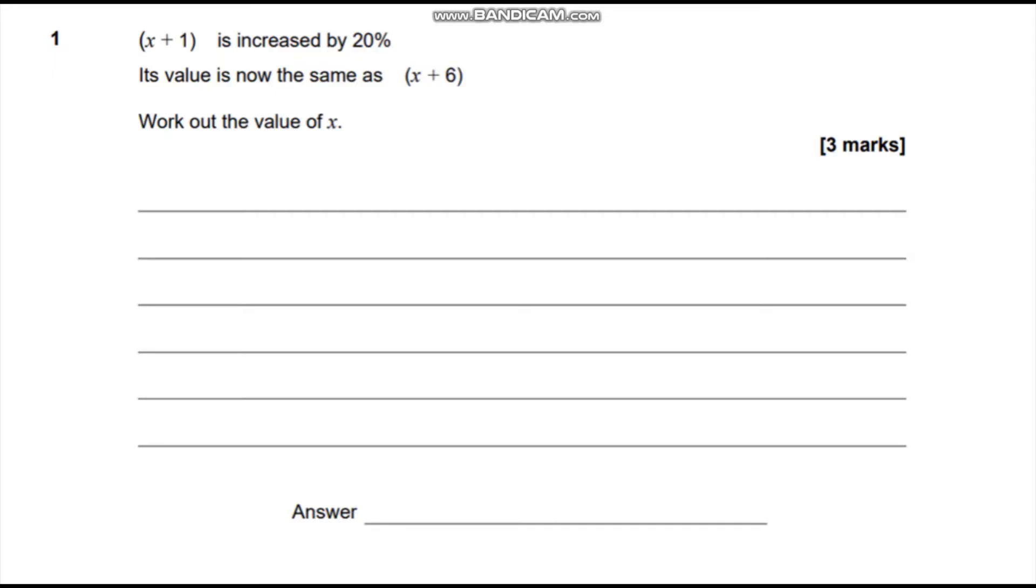In this video we're looking at question 1 of the 2022 paper 1 for the GCSE further maths. We've got x plus 1 is increased by 20%. Its value is now the same as x plus 6. Work out the value of x.